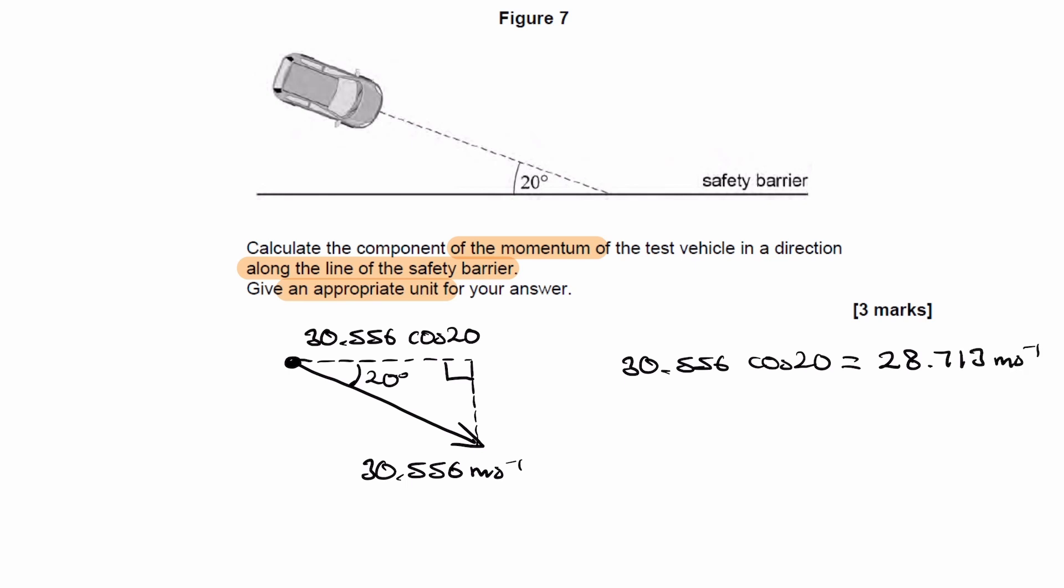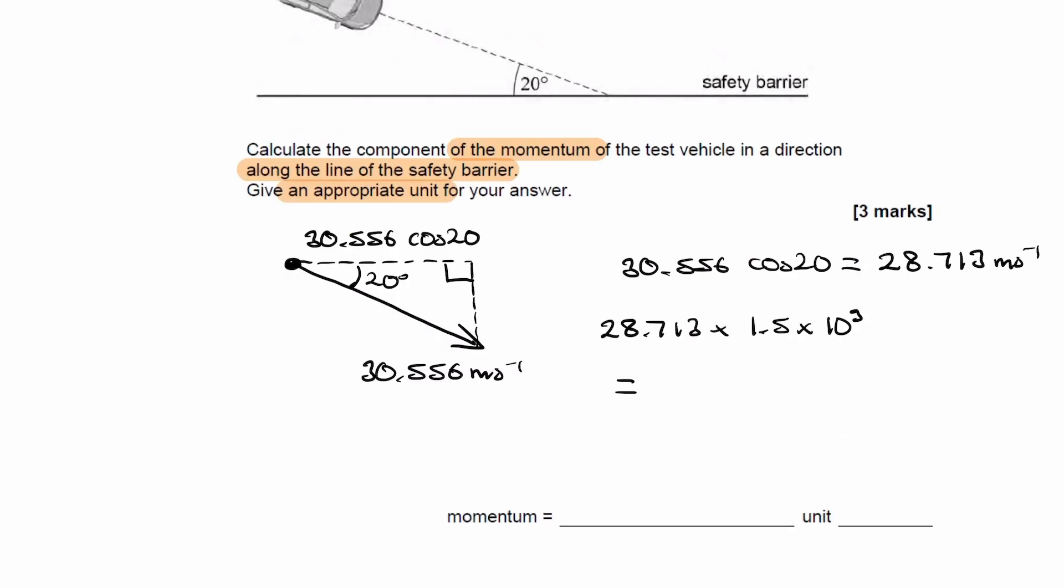We want to work out momentum, so we just times that by mass. So 28.713 multiplied by the mass, 1.5 times 10 to the 3. And that would be equal to 43,000. And the units for momentum would be newton seconds. You can also use kilograms metres per second, which is just mass times velocity.